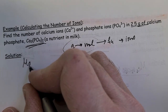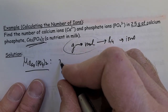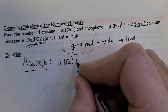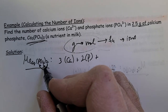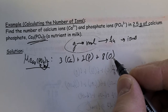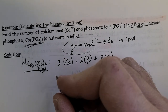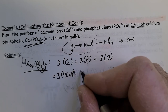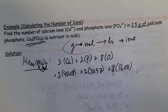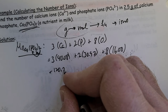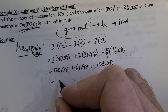First, we need the molar mass of calcium phosphate. For every one mole, we have three moles of calcium, two moles of phosphorus, and two times four — eight — oxygens. Looking up each on the periodic table: calcium is 40.08, phosphorus is 30.97. Multiplying out: 120.24 plus 61.94 plus 128 gives a molar mass of 310.18 grams per mole.